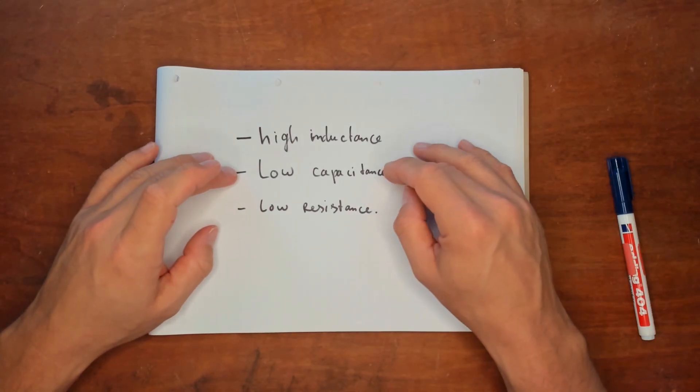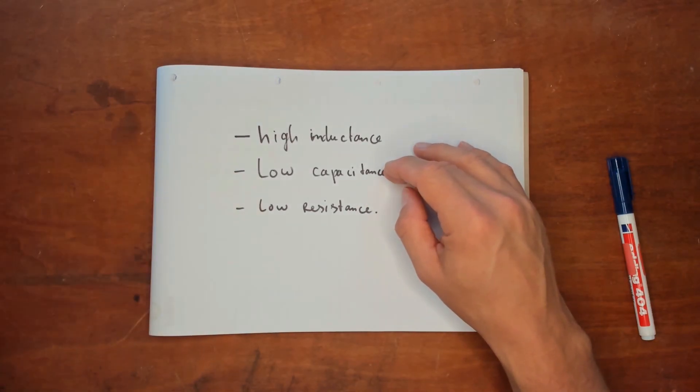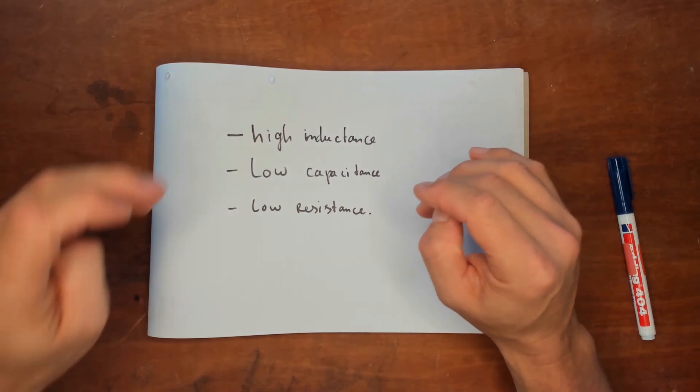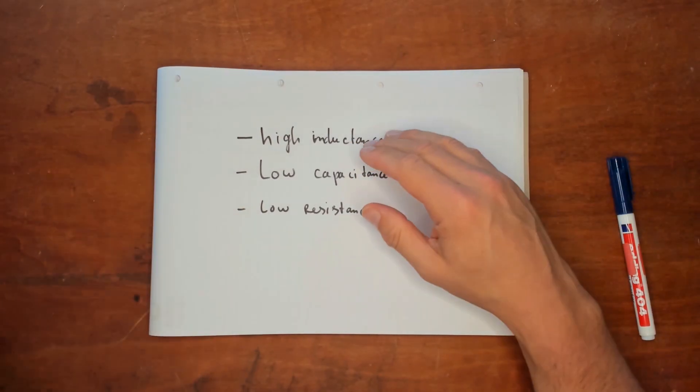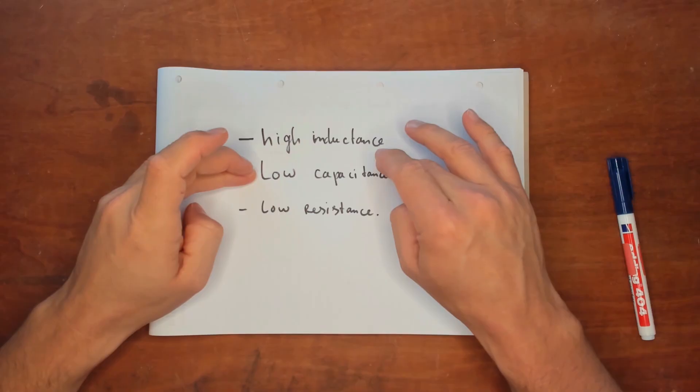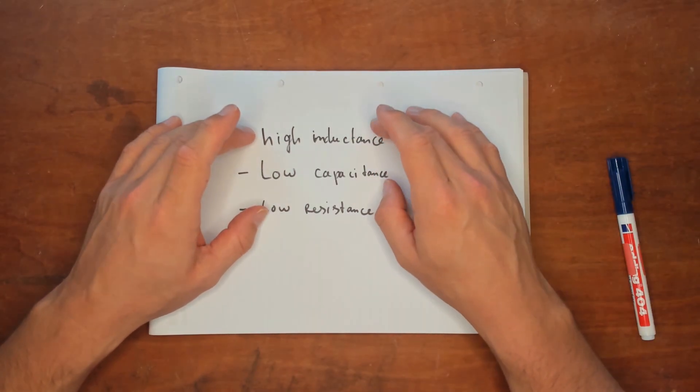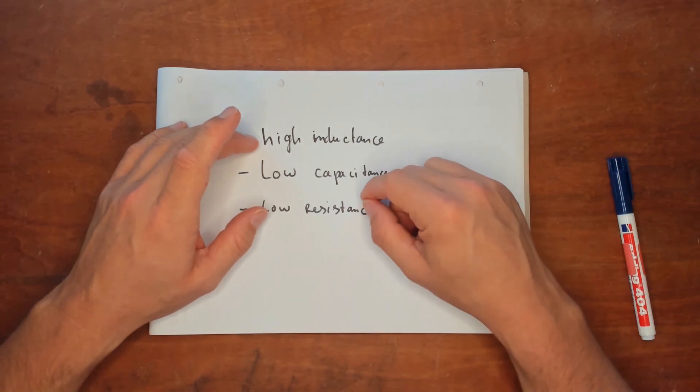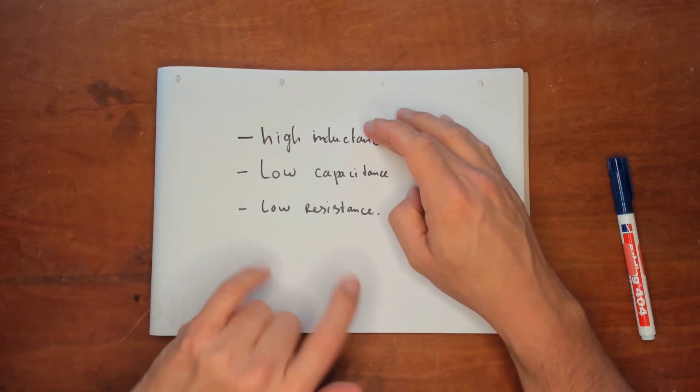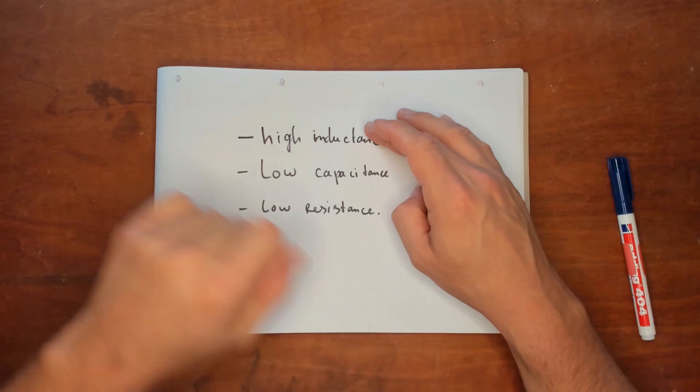For low capacitance the bifiler coil isn't suited, because as we've learned in another video the capacitance of a bifiler coil is increased. That is a problem. We can't use a regular bifiler coil. And the inductance is increased by making more turns, but making more turns usually also ends up in more resistance.